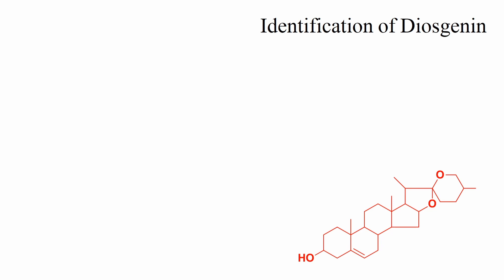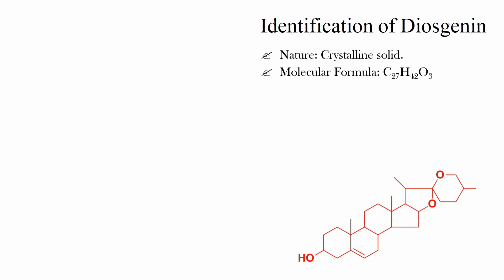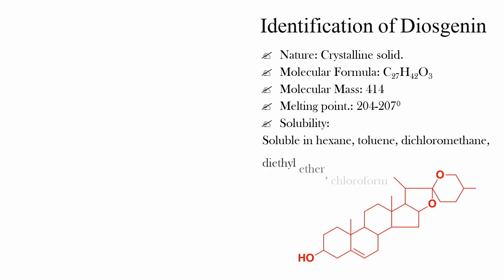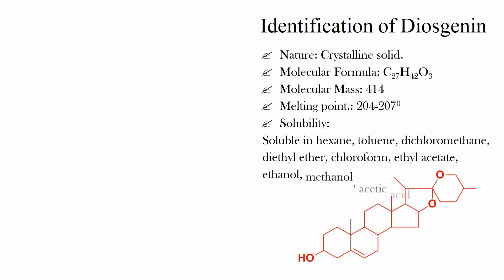Identification of diosgenin — Nature: Diosgenin is a crystalline solid having molecular formula C27H42O3. Its molecular mass is 414. Diosgenin has a melting point of 204–207°C. Solubility: Diosgenin is soluble in hexane, toluene, dichloromethane, diethyl ether, chloroform, ethyl acetate, ethanol, methanol, and acetic acid. These are the physical characteristics of diosgenin.